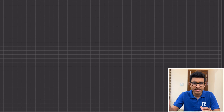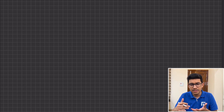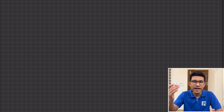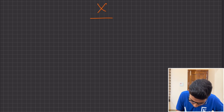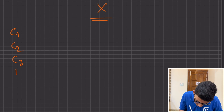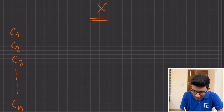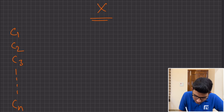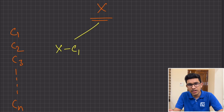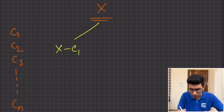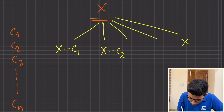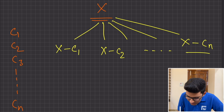We will solve this problem with the same mindset: given a very big problem, we'll try to reduce it into smaller problems, solve those smaller problems, and then find a relation between them to get the answer for the bigger sub-problem. You want to construct sum X, and you have coins C1, C2, C3, up to CN available. If you use coin C1, you would then require X minus C1 to be constructed. Similarly, if you use coin C2, you would require X minus C2, and so on. All these are smaller sub-problems compared to X.